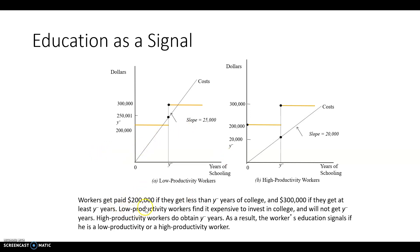The workers get paid $200,000 if they get less than Y-bar years of college and $300,000 if they get at least Y-bar years. Since the low productivity workers find it expensive to invest in that amount of college, they're going to choose the lower salary over paying so much to go to school, even though they would get paid a higher salary. The high productivity workers find it so inexpensive that they'll choose to go to college in order to get the higher wage, so the workers divide themselves into two groups.